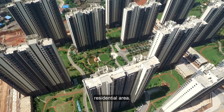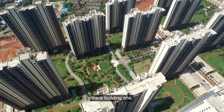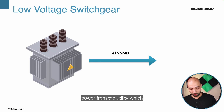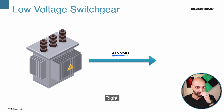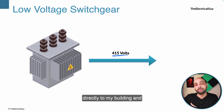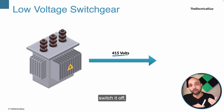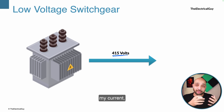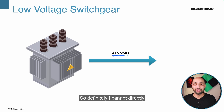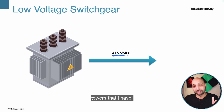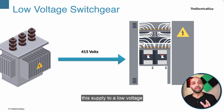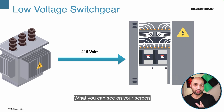Imagine you have a residential area with a couple of buildings — building one, two, and three. To power those buildings you receive power from the utility at 415 volts AC. You cannot give this power directly to the buildings. You need some means to control the power, switch it on and off, provide protection in case of fault, and also measure current and voltage. So instead, you connect this supply to a low voltage switchgear panel.